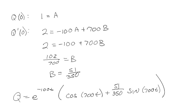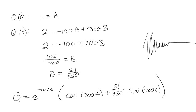So the full solution is Q = e^(−100t)·[cos(700t) + (51/350)·sin(700t)]. This describes the charge flowing through the circuit over time. With this initial condition, in a pretty quick amount of time the oscillation will damp out almost immediately. You can solve any series RLC circuit using this exact same methodology, and even non-homogeneous equations can be handled the same way you've been doing them.